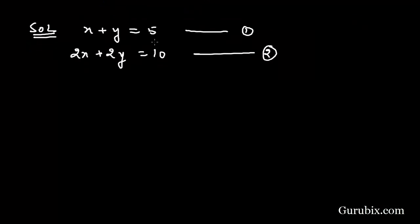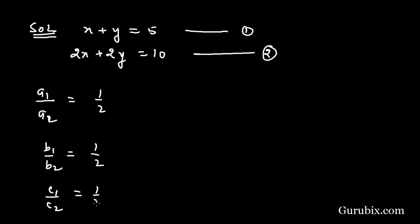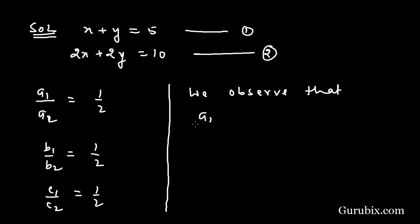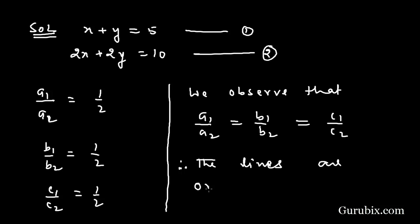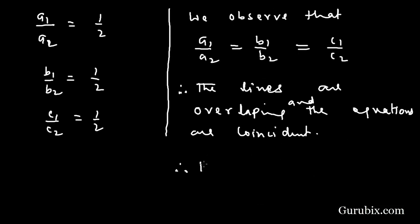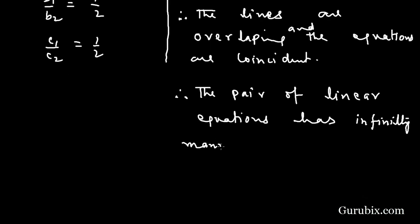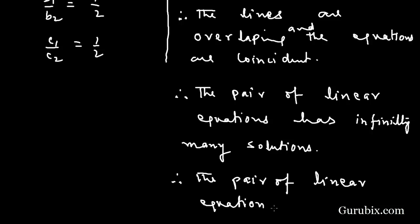Now we shall check whether this pair of linear equations is consistent or not. For that we check A1 over A2, which is 1 over 2; B1 over B2, which is also 1 over 2; and C1 over C2, which is also 1 over 2. We observe that A1/A2 equals B1/B2 equals C1/C2. This means the lines are overlapping and the equations are coincident, so the pair of linear equations has infinitely many solutions and is therefore consistent.